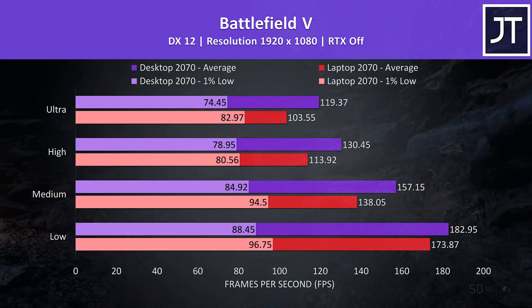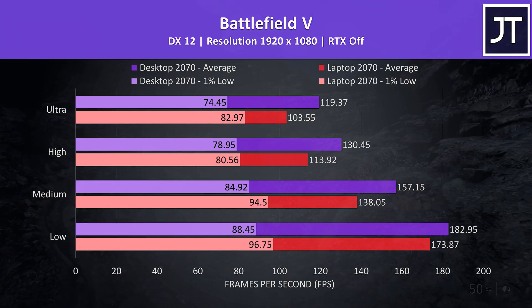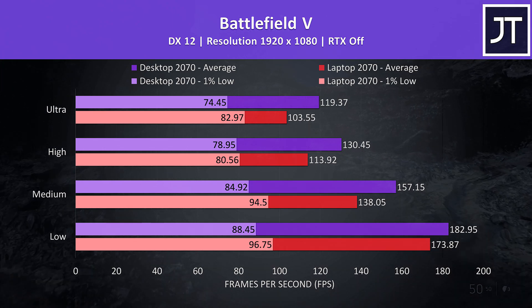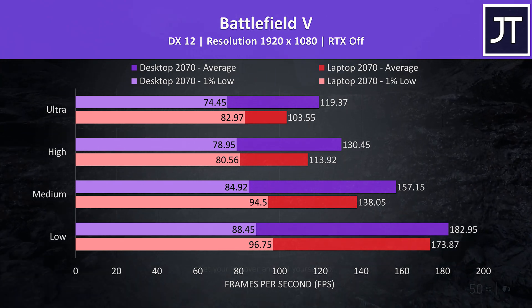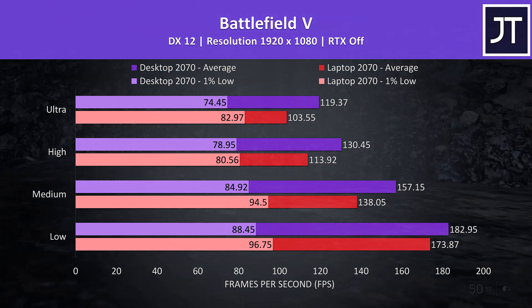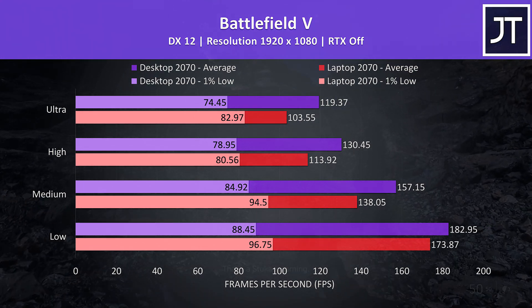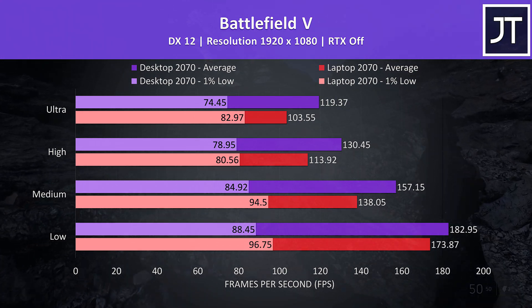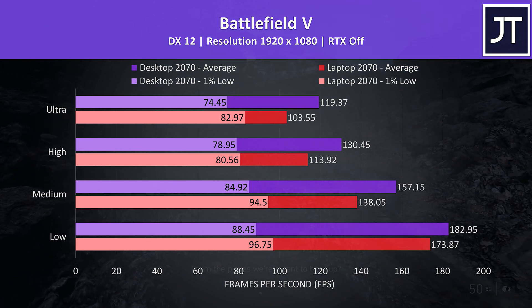Battlefield 5 was tested in campaign mode by running through the same section of the game on both machines. The desktop 2070 again saw a 15% boost to average FPS at ultra settings, though strangely the laptop was scoring better in 1% low performance at all setting levels.